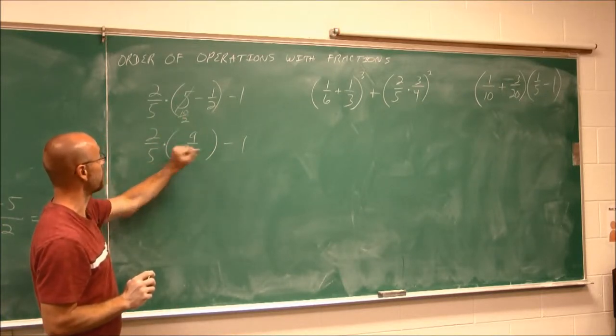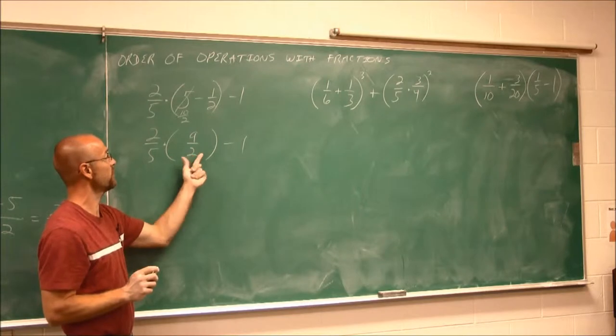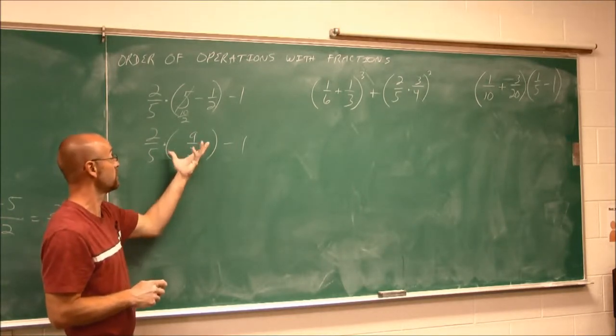10 minus 1, both over 2, would be 9 halves. So that was the first step. I worked within those grouping symbols. Now there's nothing within the grouping symbols that I can do.